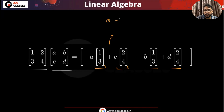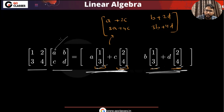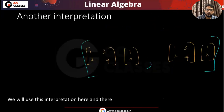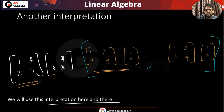Now you can see this on the slide. We'll be using this interpretation here and there. For example, if you want to multiply [1,2;3,4] by [1,0;1,2], then you are multiplying this matrix with the first column vector to get the first result vector, and multiplying this matrix with the second column vector to get the second result vector. That's what you're doing.